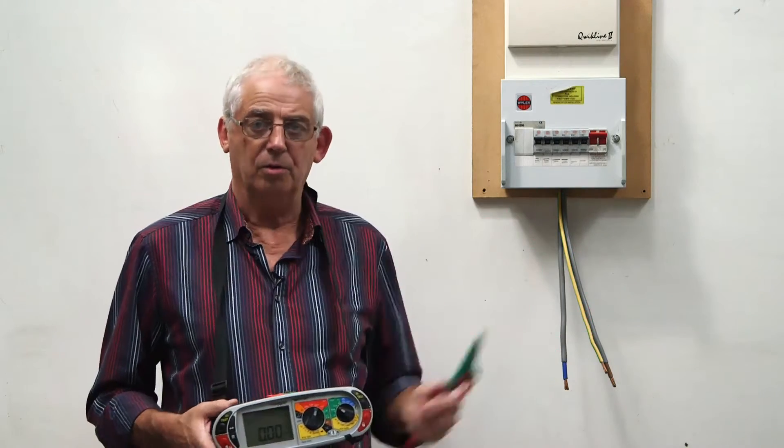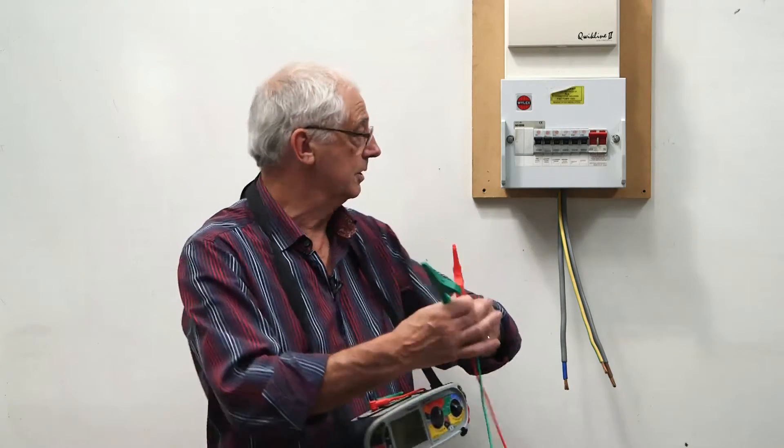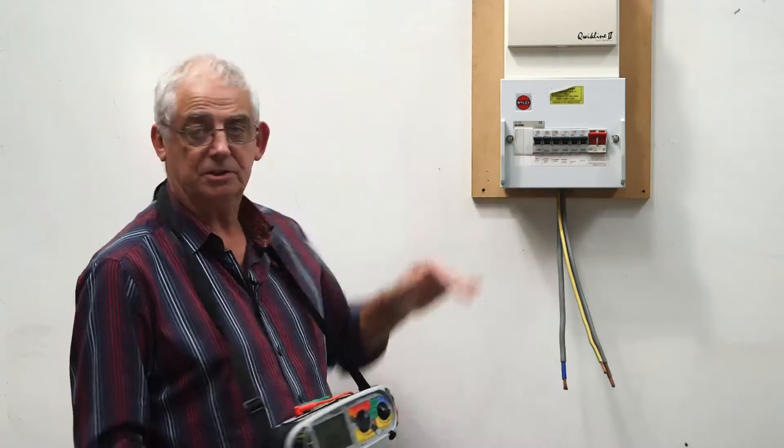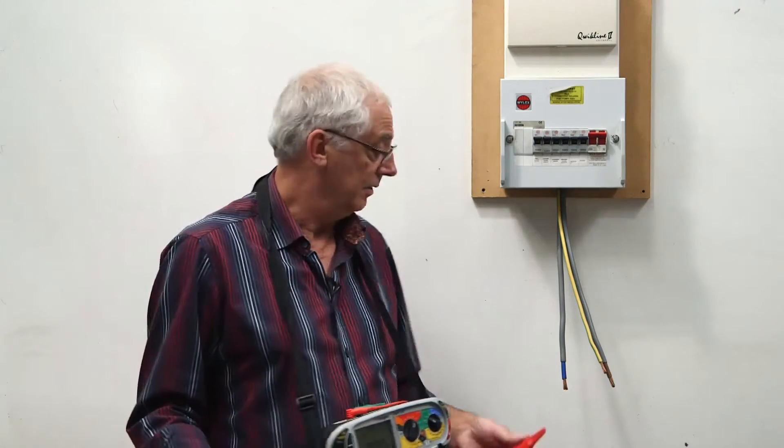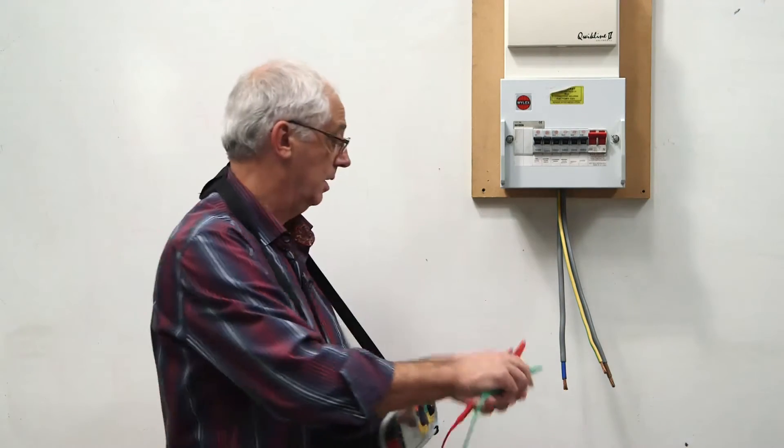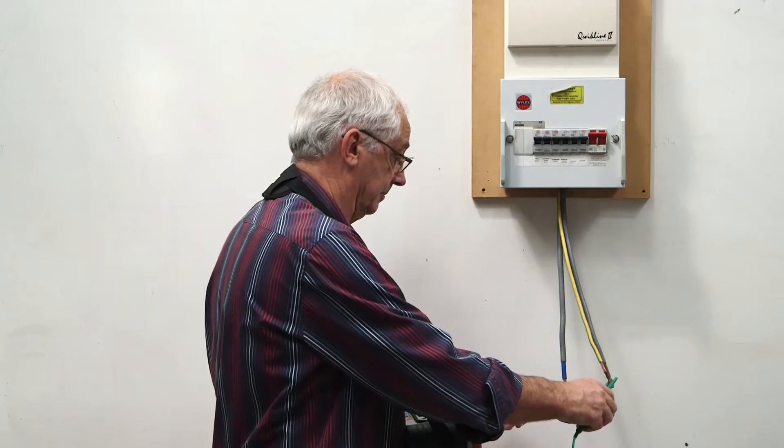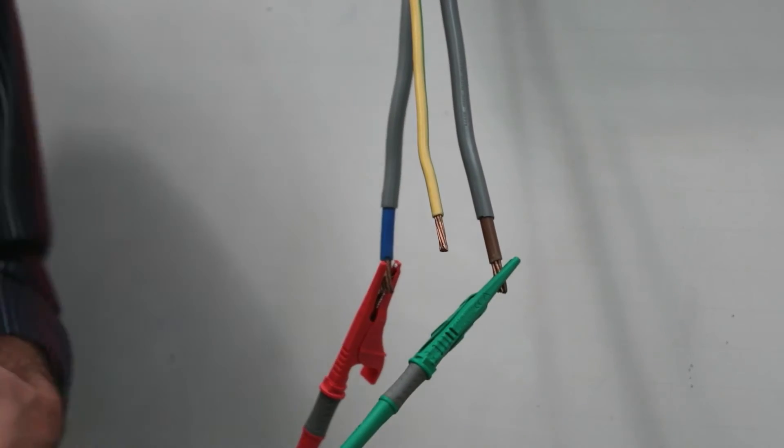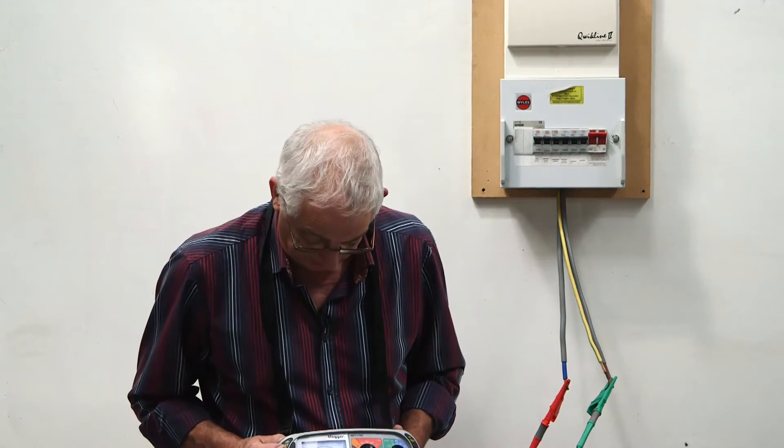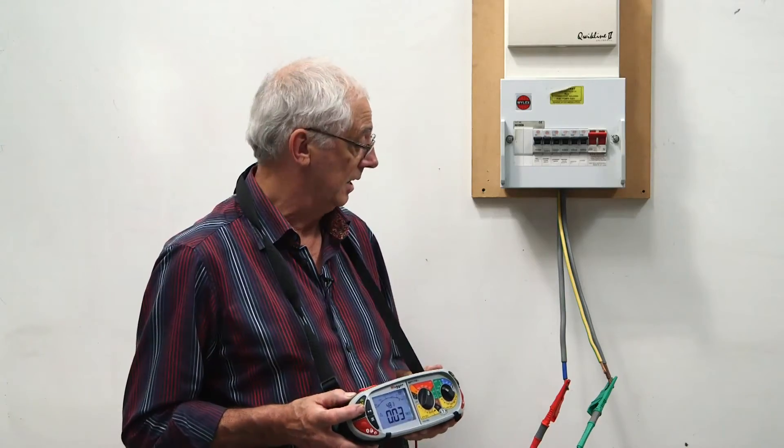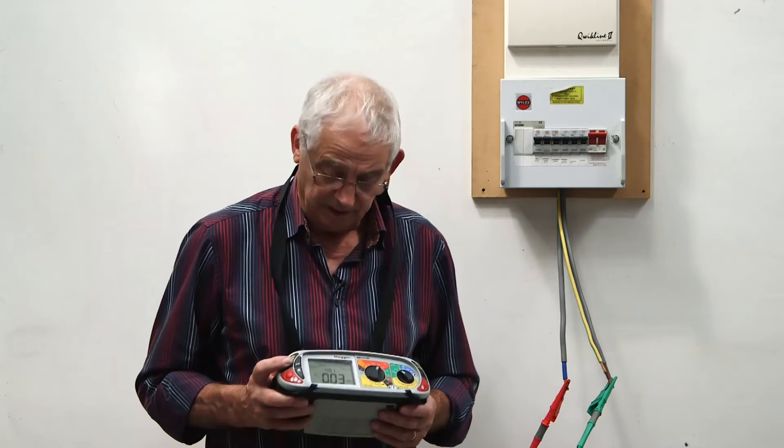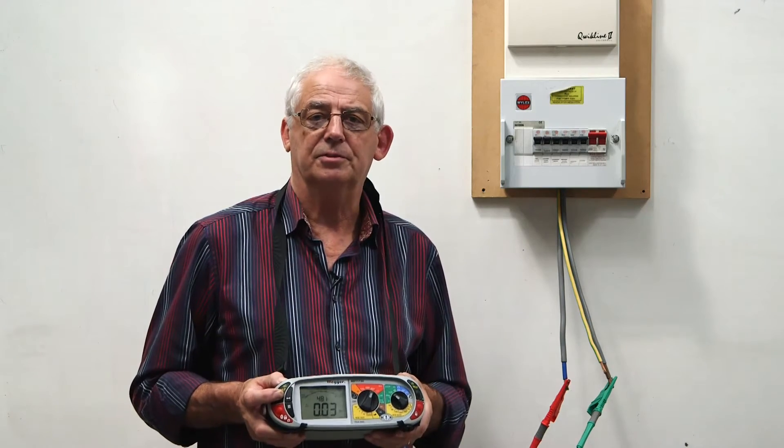Once I've carried out all of that, I need to make sure that all of these switches are turned on. I know the instrument's working and I need to test first of all between live conductors. Push the button and I've got a reading of 0.03 between live conductors. That's telling me that that's a low resistance fault.